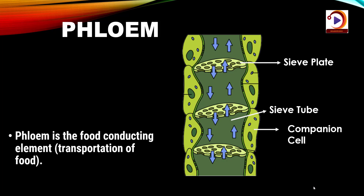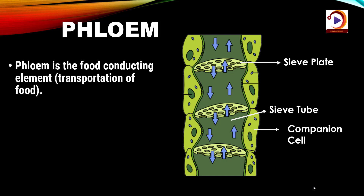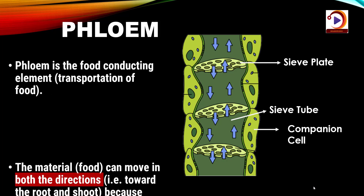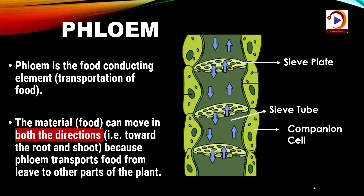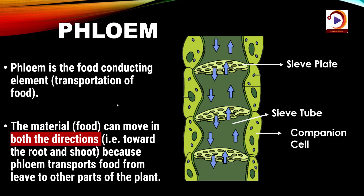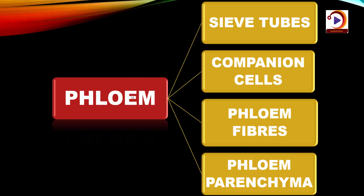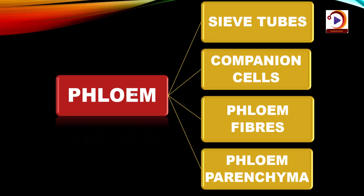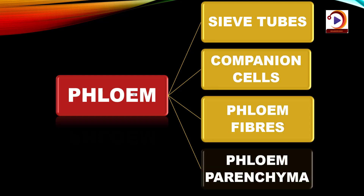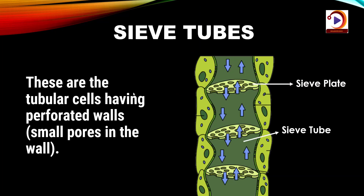Now comes phloem. Phloem is the food-conducting element — it helps in transportation of food, and the material can move in both directions. Even the roots require energy and therefore need food, so the movement has to be bidirectional. Phloem is made up of four types of elements: sieve tubes, companion cells, phloem fibres and phloem parenchyma. Except for phloem fibres, all phloem cells are living cells.